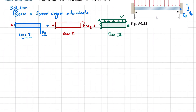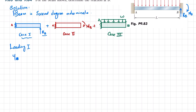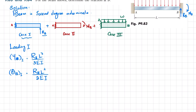Writing down the results for Loading 1: deflection at point B due to loading 1 is yB₁ = RB·L³ / (3EI), and slope at point B due to loading 1 is θB₁ = RB·L² / (2EI). Both are positive since RB acts upward.